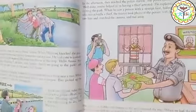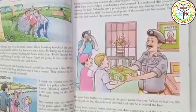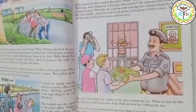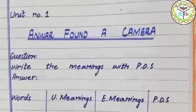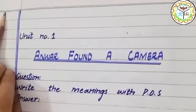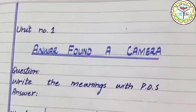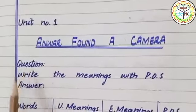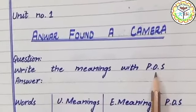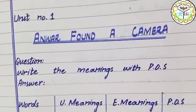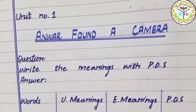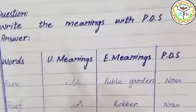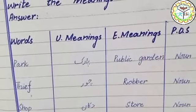The remaining story and reading — students, the remaining story with translation you will learn on your own. So open your notebook. Our next question is the meanings. Students, mention the date, draw a margin line, then unit number 1, unit name 'Anwar Found a Camera.' Write the meanings with parts of speech. Parts of speech — in which we know about noun, verb, adverb, and adjective.